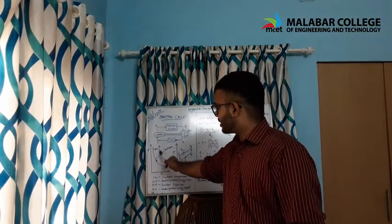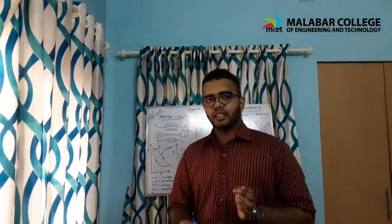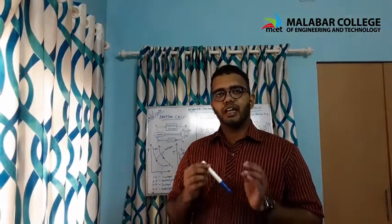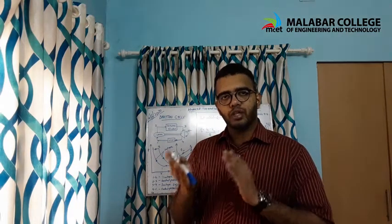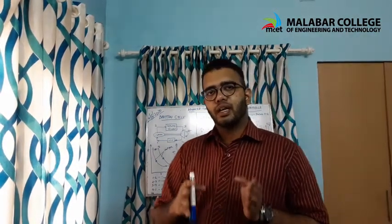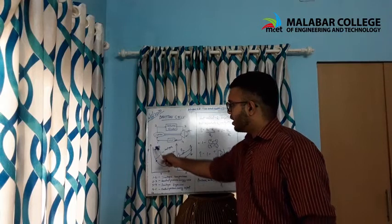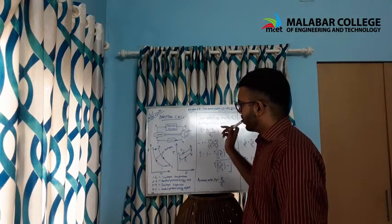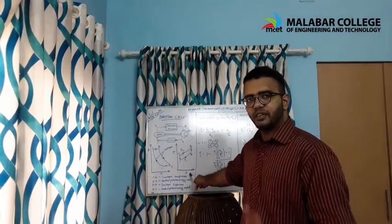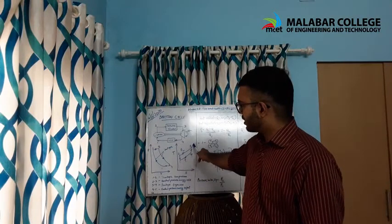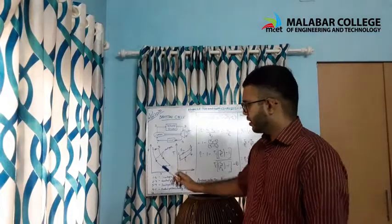In the PV diagram, processes 1 to 2 and 3 to 4 are isentropic processes. In an isentropic process, entropy remains the same. Since entropy does not vary in processes 1 to 2 and 3 to 4, these appear as straight vertical lines in the TS diagram, though temperature does vary.